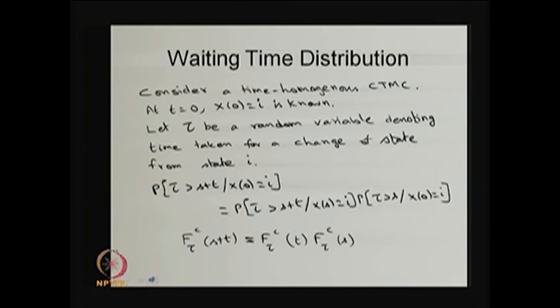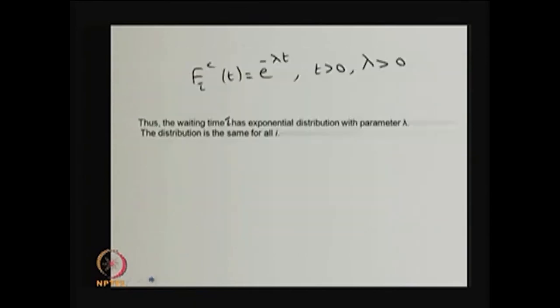To summarize: the time spent in each state is exponentially distributed with some parameter λ_i. The distribution form is the same for all states i, but the parameter λ may depend on the particular state i.